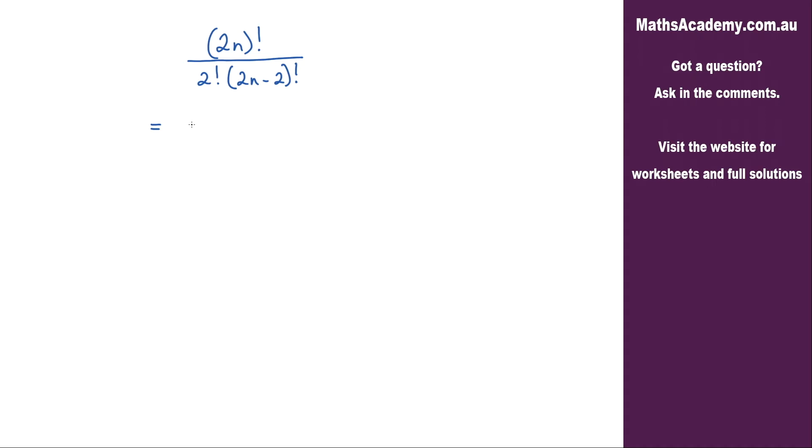I'm going to expand this 2n factorial to 2n multiplied by 2n minus 1 multiplied by 2n minus 2 factorial.